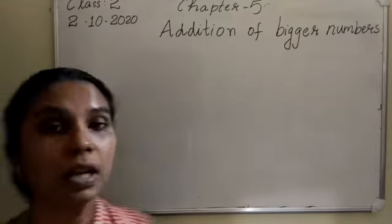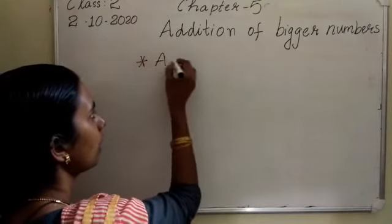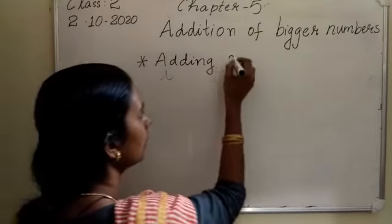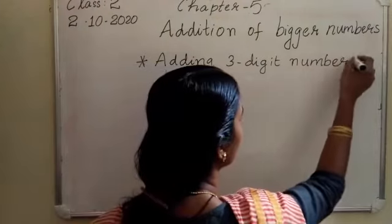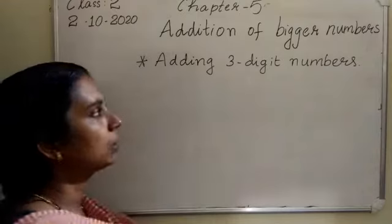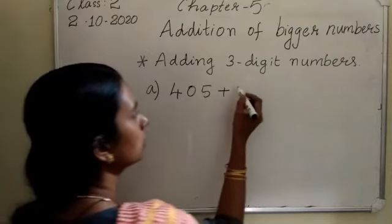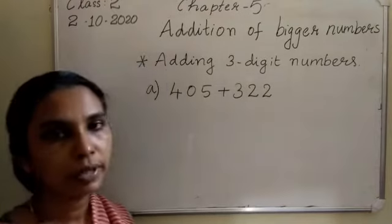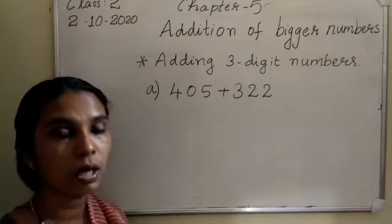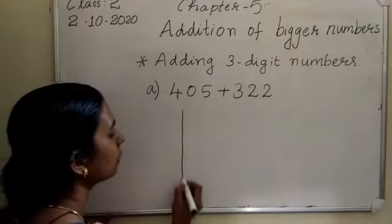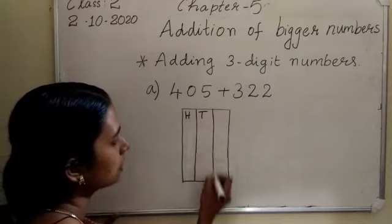Look at this example. Here there are 3 digits, that means we have to draw 3 columns: the 100's column, 10's column, and 1's column. First of all, draw the box and write the 100's place, 10's place, and the 1's place.